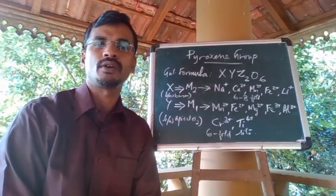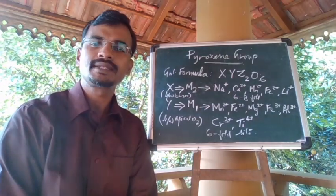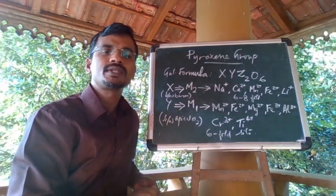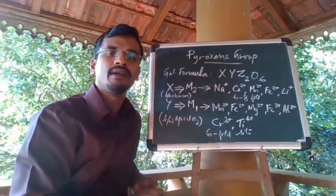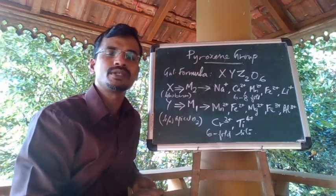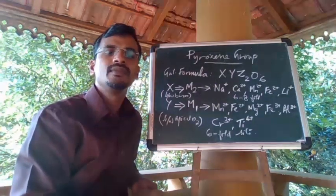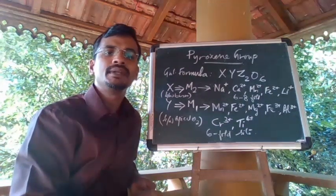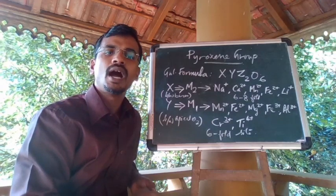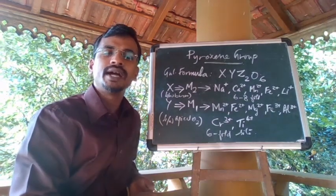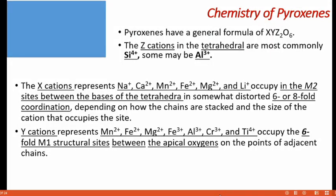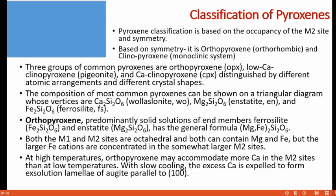Now let's discuss the chemistry of pyroxenes. Pyroxenes have a general formula of X Y Z2O6, in which X cations occupy the M2 sites having 6- or 8-fold coordination by cations like sodium, calcium, manganese, iron, magnesium, and lithium. Y cations are represented by Mn, Fe, magnesium, iron, aluminium, chromium, and titanium at the octahedral M1 structural sites. The M1 sites occupy space between the apical oxygens whereas M2 sites occur between the two bases of the tetrahedra. Pyroxenes are classified on the basis of occupancy of M2 sites and their symmetry.